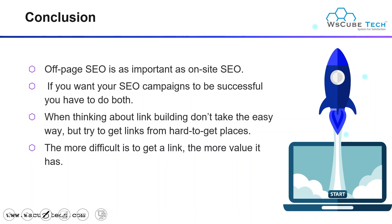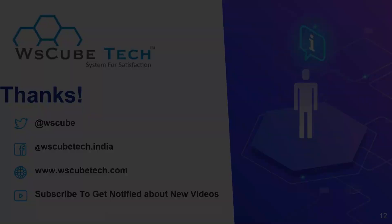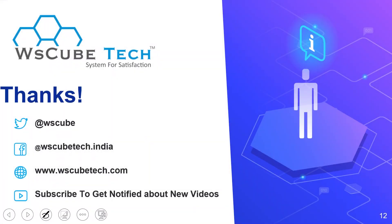In conclusion, off-page SEO is as important as your on-page SEO. If you want your SEO campaigns to run successfully, you have to work on both — first on your on-site SEO, then also on your off-page SEO. When thinking about link building, don't take the easy way — try to get links from harder-to-get places, like sites with higher domain authority and higher page authority. Check your links' progress in your tools. In our complete module, we will also discuss how to track your backlinks. The more difficult it is to get a link, the more value it has. Thank you so much for watching this video.